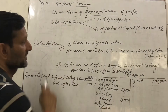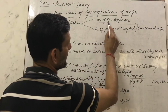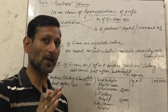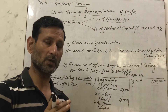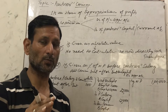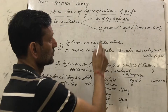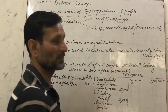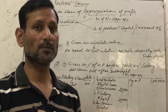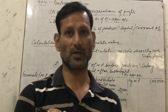So how will we record Partners Commission? We record it to the debit of the Profit and Loss Appropriation Account — showing it on the debit side for whichever partner's commission is payable — and to the credit of the Partners' Capital or Current Account.